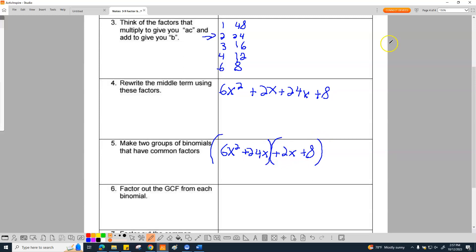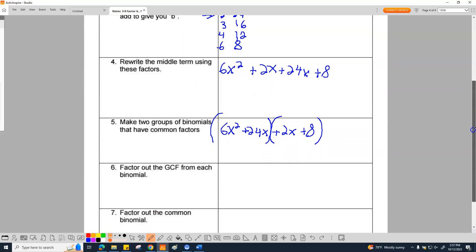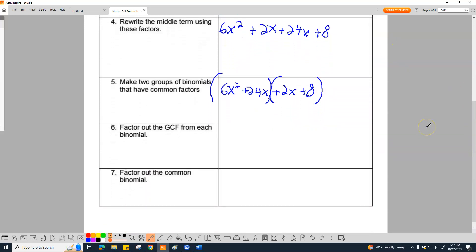So now we have to factor both of those things. Back to the binomials. I'm going to pull out, in this case, a 6x. Pull that out and I'm left with x plus 4. And then I'm going to take out a 2 on the next one. So I have plus 2, and that leaves me with x plus 4.